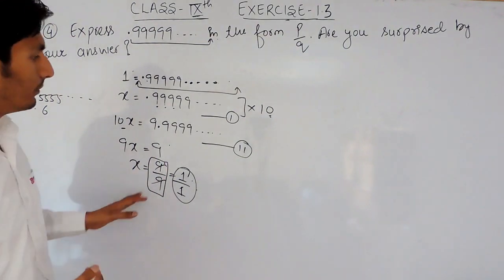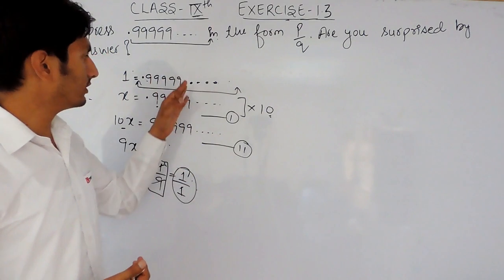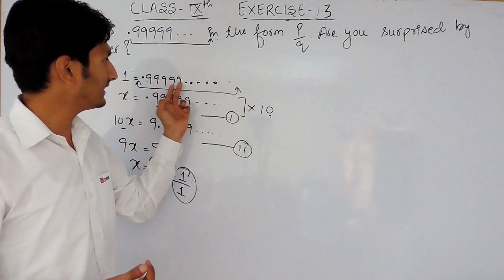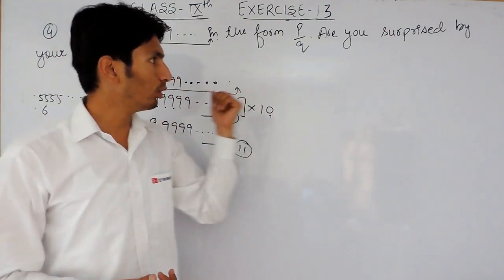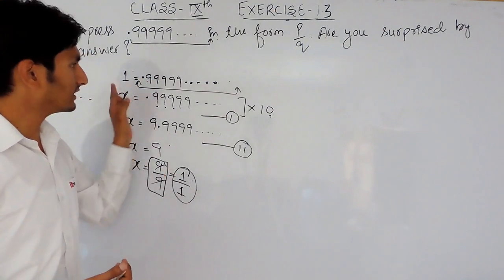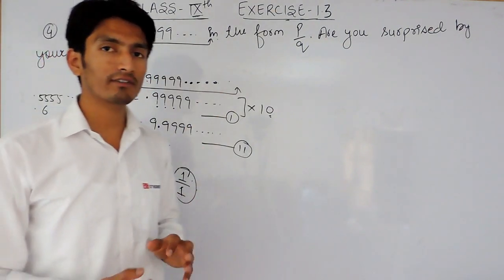So this is how you can convert this into the form of P upon Q, and because this is very close to 1, that is 9999999 till infinity, this expression can be written as equals to 1, or you can say the value of this will be equals to 1.